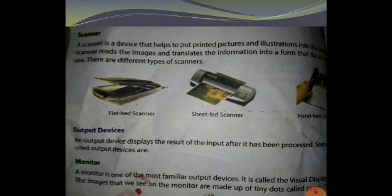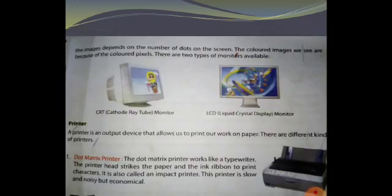The colored images we see are because of colored pixels. There are two types of monitors: CRT, that is cathode ray tube monitor, and LCD, liquid crystal display monitor.